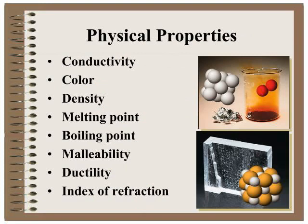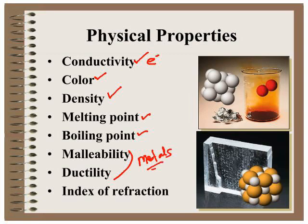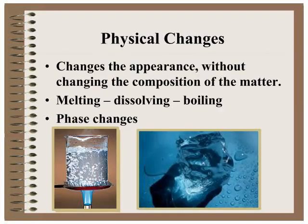Some physical properties you may be familiar with: conductivity does not change the nature when we pass electrons through a substance; color; density; melting point; boiling point; malleability and ductility, which are usually associated with metals; and index of refraction, which is how a substance absorbs and reflects light. All of these properties can be measured without changing the identity of the substance.